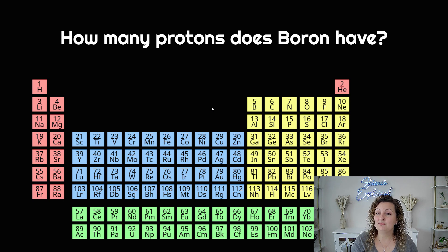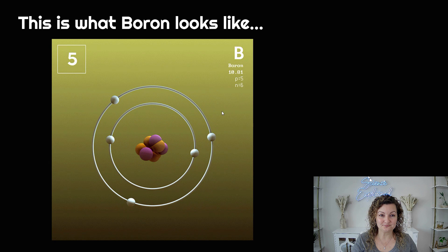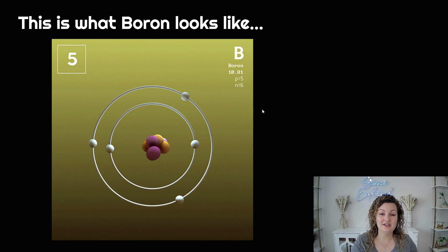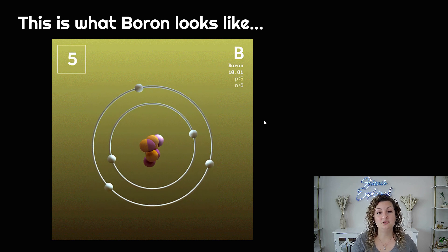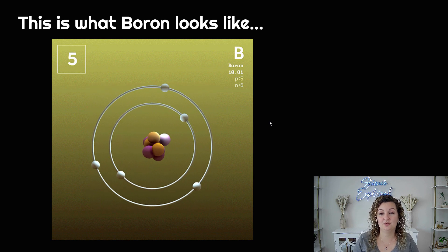So how many protons does boron have? In order to figure that out, the first thing you've got to do is look at your periodic table and search for boron. Boron's symbol is a capital B. You can look for it, and you can see the atomic number is five. So we have five protons in boron, and this is what boron looks like. We have five protons in our nucleus, six neutrons, and five electrons orbiting in our cloud — equal to our protons because this is a neutral atom of boron.